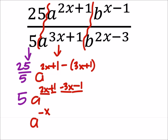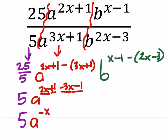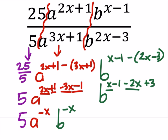And then with the b's, I've got x minus 1 minus the 2x minus 3. So that would be b to the power of x minus 1 minus 2x but now plus 3. So that's going to be b to the power of x minus 2x is negative x, and then negative 1 plus 3 is plus 2.